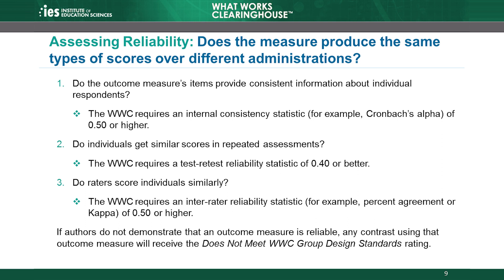An example of an internal consistency statistic is Cronbach's Alpha. The second way is to demonstrate sufficient test-retest reliability. Test-retest reliability measures to what extent the same individuals get similar scores in repeated assessments. The WWC requires a test-retest reliability statistic of 0.4 or higher. The third way is by showing that different raters scored the same individuals similarly, a measure called inter-rater reliability. The WWC requires that inter-rater reliability, often measured as the percent agreement between the raters or using a measure called Kappa, is 0.5 or higher.